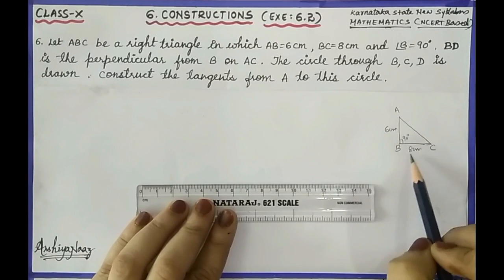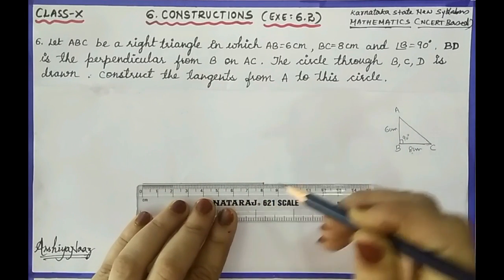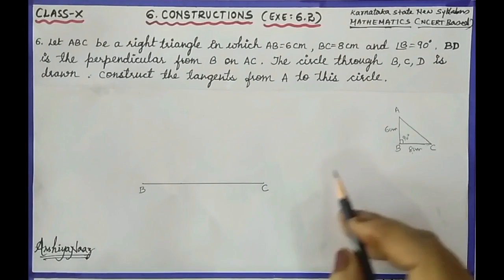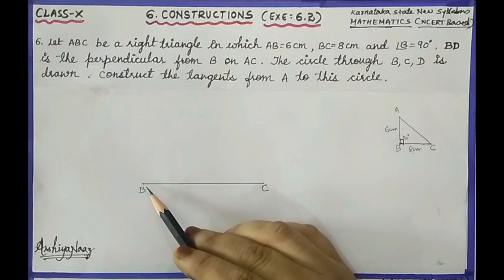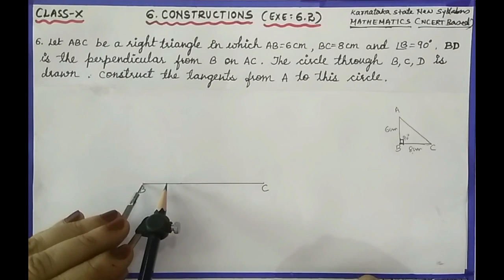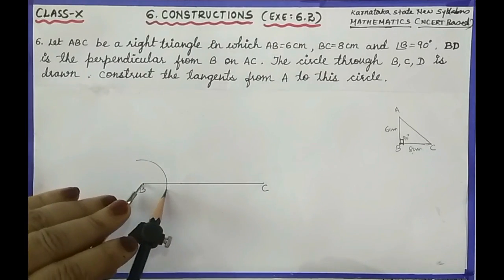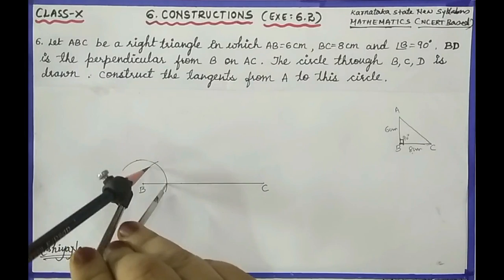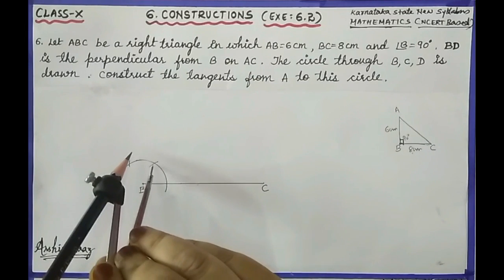First let us draw the baseline BC of 8 cm length. Next we need an angle of 90 degrees at point B. For this, we need a compass with any radius, with B as center. Draw the arc, then from the same radius cut the arc from this point, and again cut the arc from the next point. From these two points, draw two intersecting arcs.